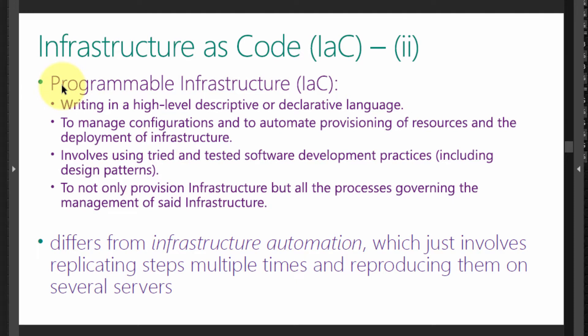So how is it done in reality? At a very high level, we describe our infrastructure using a high-level descriptive or declarative language, such as YAML. This allows us to manage our configurations, to automate the provisioning and deprovisioning of resources, and to automate the deployment of our infrastructure. And precisely because we're using the best practice tools from software development, it allows us to leverage the benefits developed in managing software over all these years — not only to provision and deploy the infrastructure, but all the processes governing the management of said infrastructure.